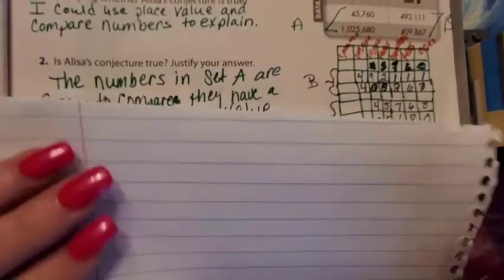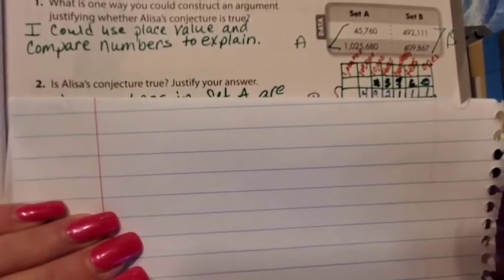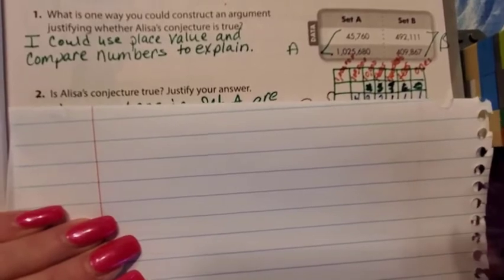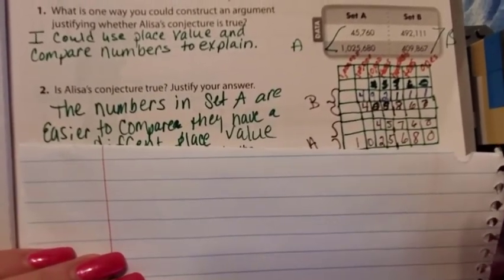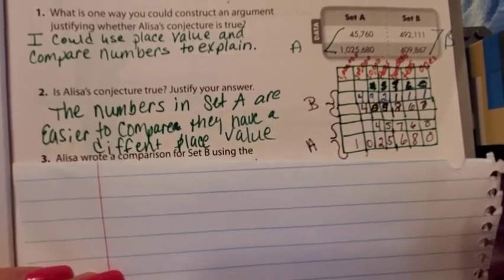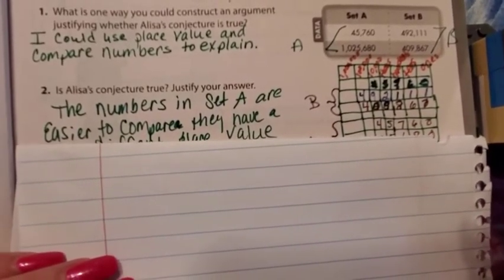Number two was - let me go back here. Number two's question is, is Alyssa's conjecture true? Justify your answer. Yes, it is true. And we just said it. The numbers in set A are easier to compare. They have a different place value right off the bat.